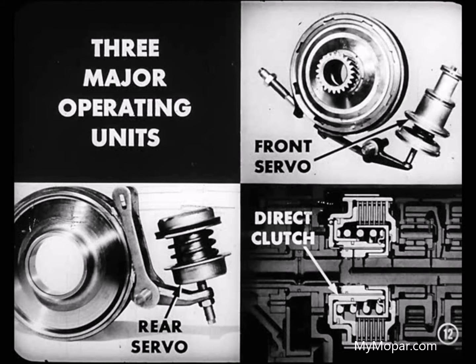Now, let's talk for a moment about the three major operating units in this power flight transmission: the front, or kick-down servo, the rear, or reverse servo, and the direct clutch. Anytime the transmission is in a driving position, one of these units is in operation.